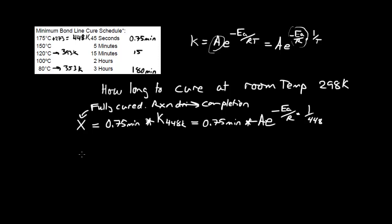X driven to completion is also going to be that number of reactions for the 80 degree C case. And that's going to be 180 minutes times K at 353 Kelvin equals 180 minutes times A e to the minus Ea over R times 1 over 353.